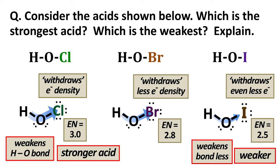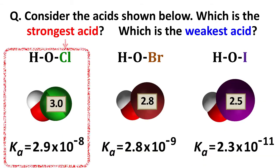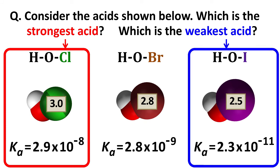Higher electronegativity withdraws more electron density, weakens the bond, makes a stronger acid. So there's our summary. HOCl is strongest, HOI is weakest, and we just went through the reasons why.